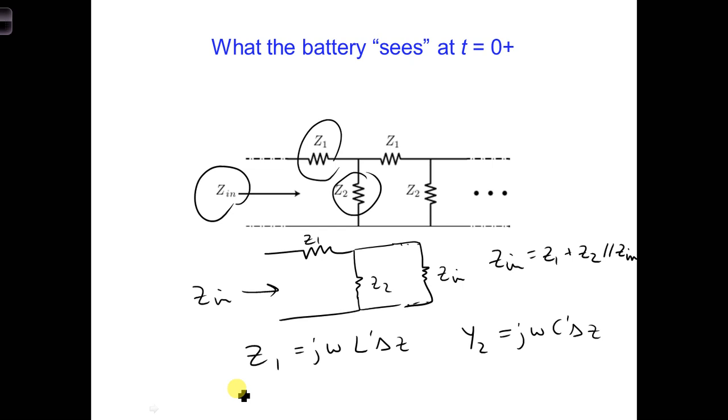If we were to work through this equation and work everything out, as you might in the circuits class, we would get the following. We would get z in is equal to the square root of l prime delta z over c prime delta z, let me extend this, minus omega l prime delta z over 2 squared.